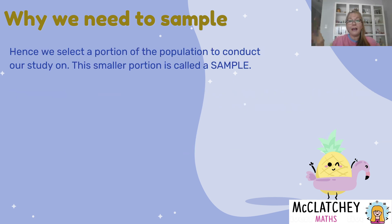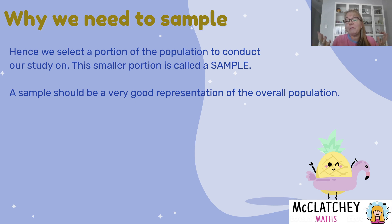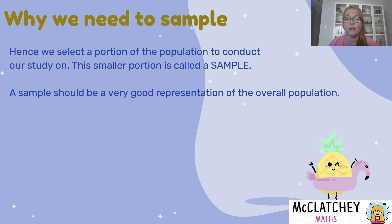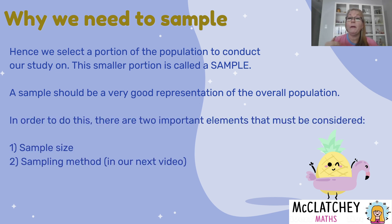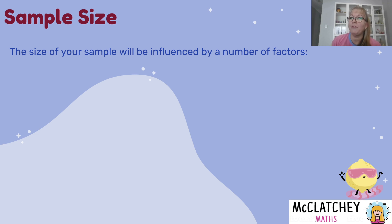In those situations, we take a sample — a smaller portion of the larger group. For a sample to be effective, it needs to be a good representation of the overall population. For example, when studying koalas across Australia, taking a few from each state gives a good picture. Two things matter: sample size — big enough to capture all the information — and sampling method, to ensure a fair representation.